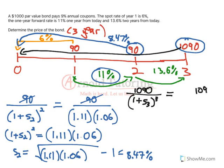How are we going to figure this out? This has to be the same as discounting the 1090 one year at a time. So 1.136 because it's 13.6% to get from 3 to 2. Then discount it 1.11. Then discount it 1.06.